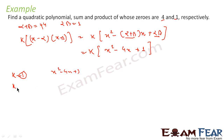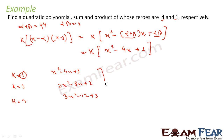If we put k = 2, we get 2x² − 8x + 2. If we put k = 3, this equation becomes 3x² − 12x + 3. All these are valid answers. In general, for an exam, just put k = 1 to get the answer.